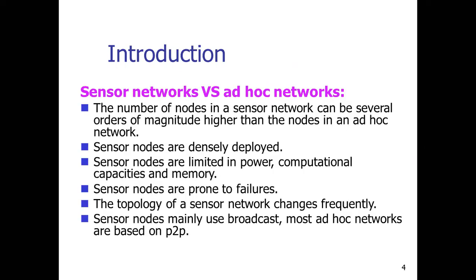If we compare the sensor network with an ad hoc network, what is the difference? As we have seen in the previous lecture, an ad hoc network consists of two or three computers or mobile units talking to each other. In a sensor network, the number of nodes can be several orders of magnitude higher than the nodes in an ad hoc network.